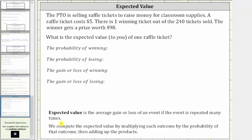To begin, the expected value is the average gain or loss of an event if the event is repeated many times. We compute the expected value by multiplying each outcome by the probability of that outcome, and then we add the products.